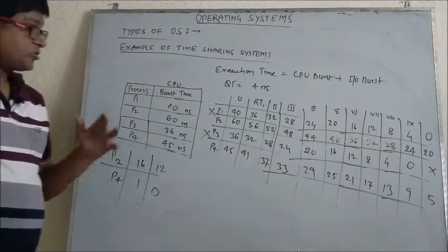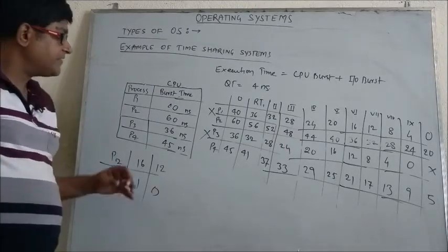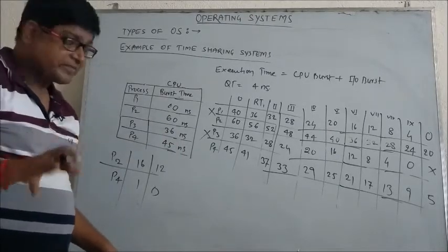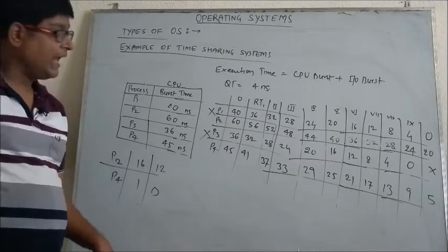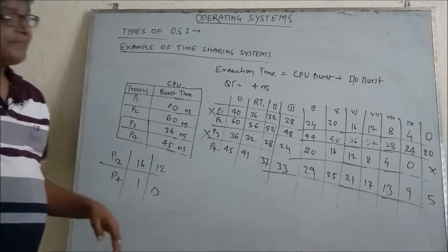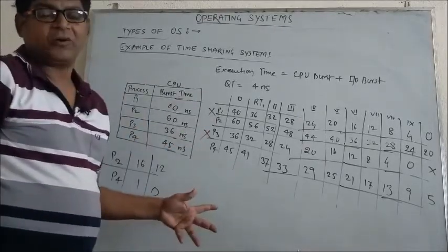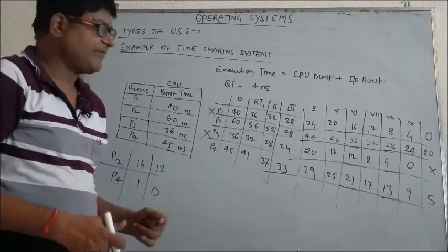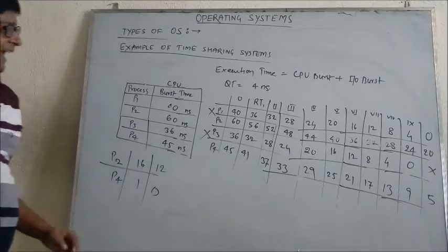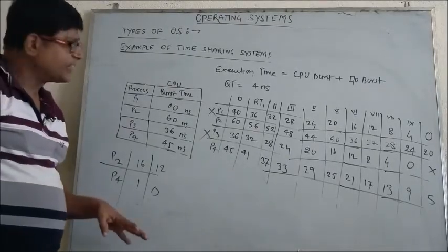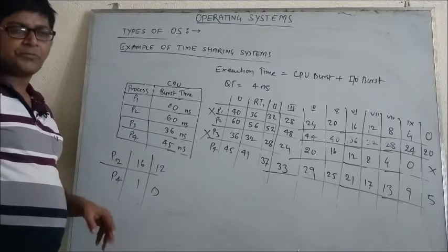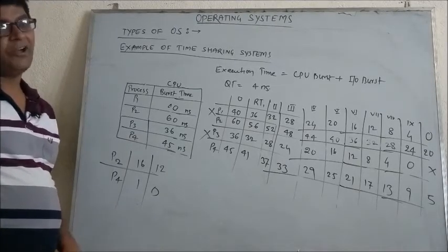From this diagram we can see that equal amounts of CPU time have been given to each and every process. First, none of the processes went into starvation. Second, there is no race condition between processes fighting for the CPU. So in a real scenario, a time-sharing operating system is much better than a multiprogramming operating system.